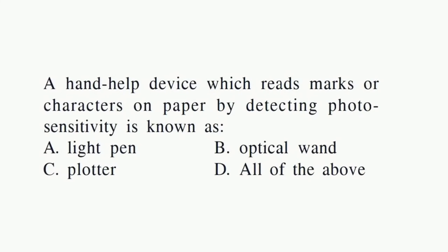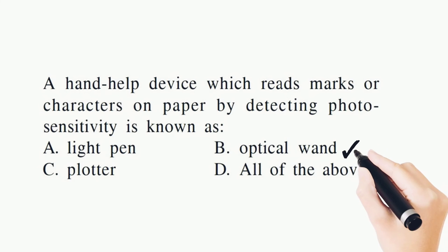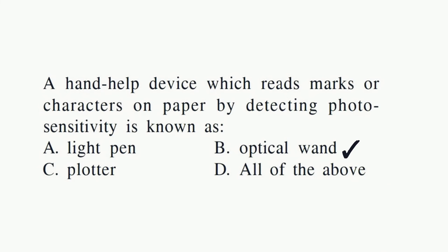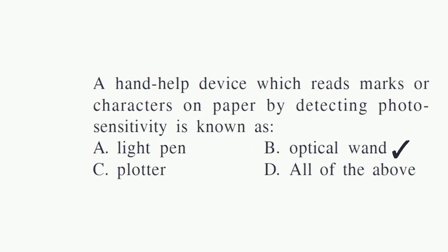A handheld device which reads marks or characters on paper by detecting photo sensitivity is called what? Which device detects marks on paper? We call it an optical wand. The correct answer is option B.